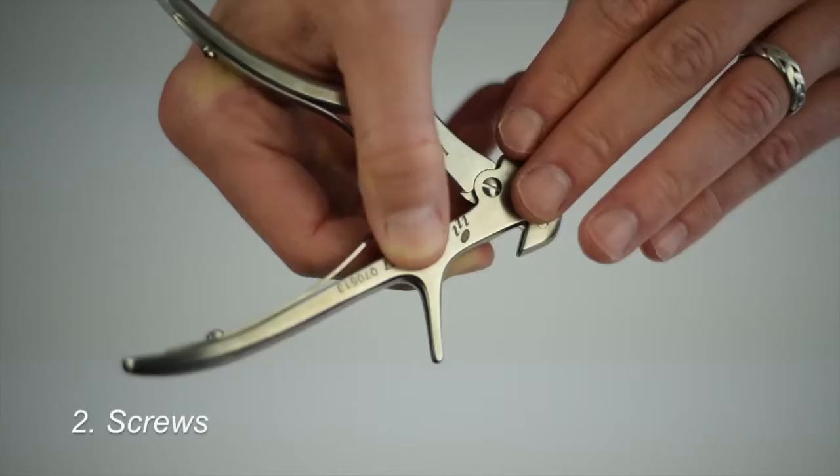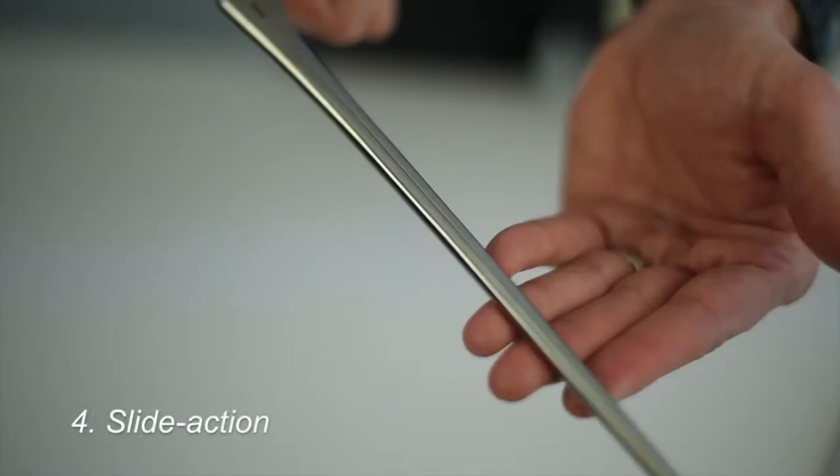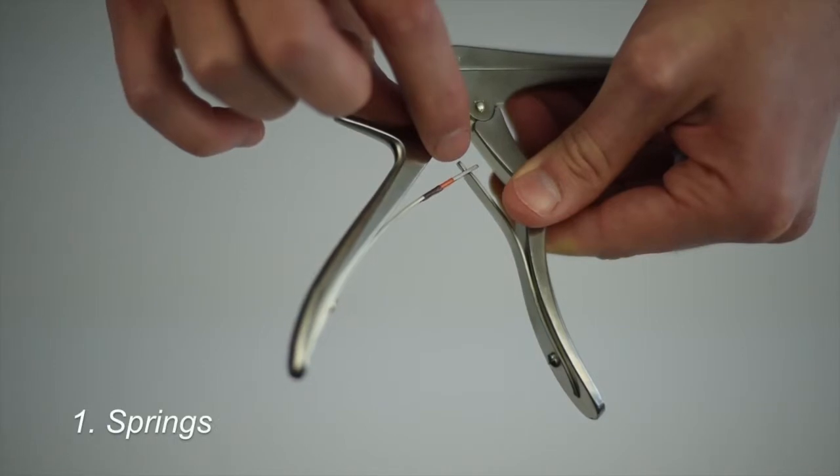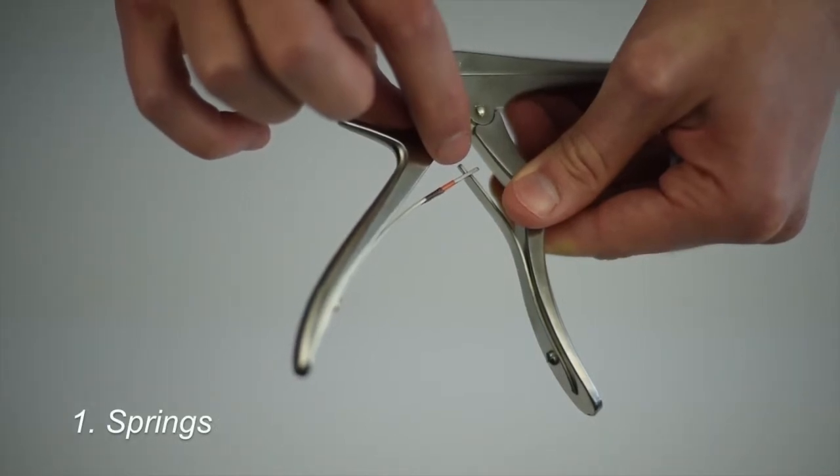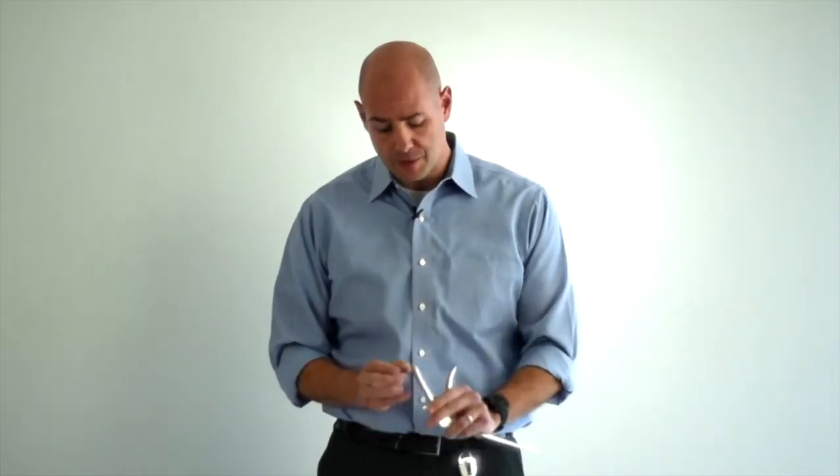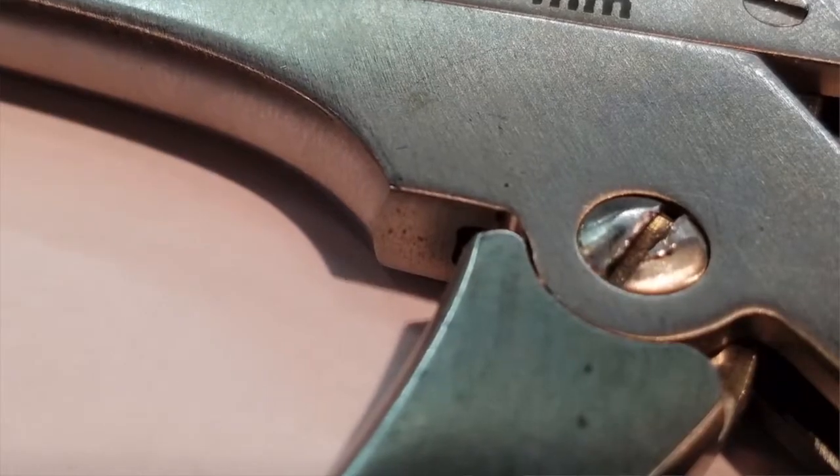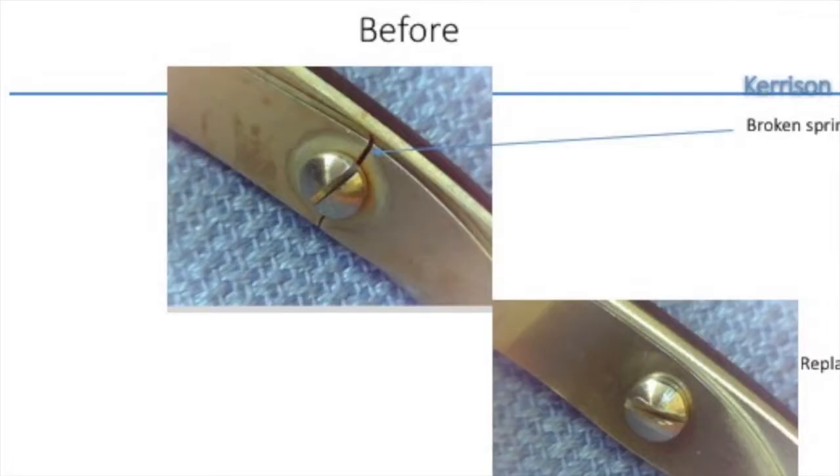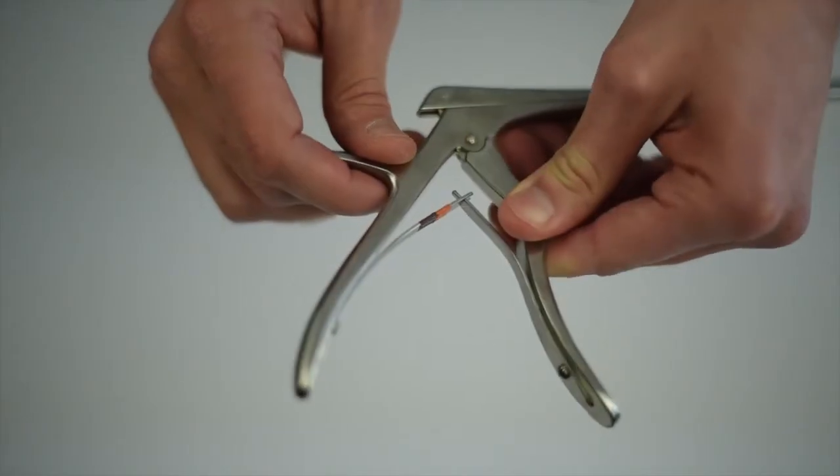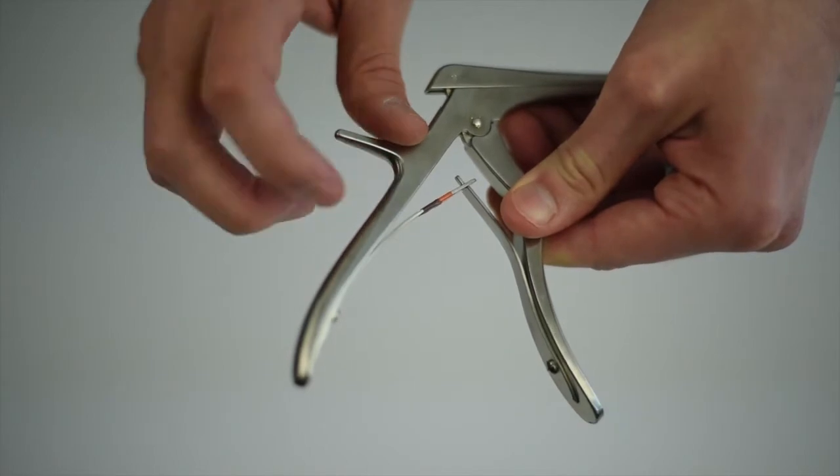There are four inspection points on a Kerison Rongeur that are key to making sure it works right. Many times what you see in the springs is either a burr on the screws that hold the springs in, or a crack in the spring due to sterilization or the age of the instrument. Additionally, on the spring you want to make sure that they meet correctly.